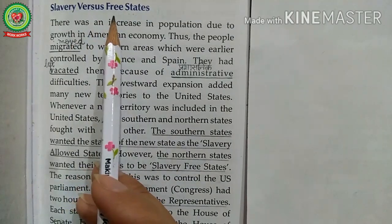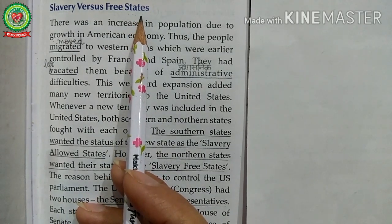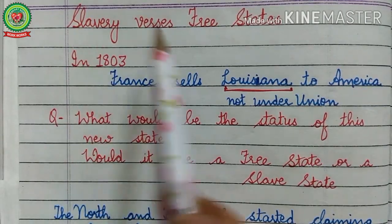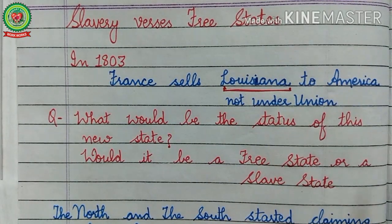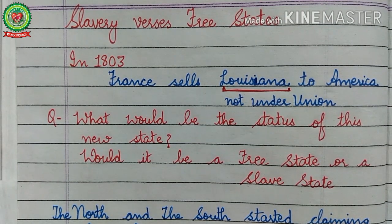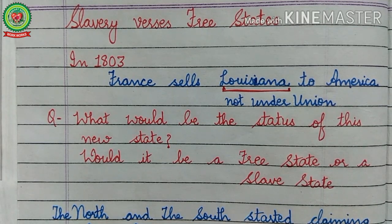Slavery versus free states — this was another main reason of the American Civil War. Before reading, let us discuss the main points. There was an increase in population due to growth in American economy. Thus, the people migrated to the western areas which were earlier controlled by France and Spain. They vacated those areas because of administrative difficulties. This westward expansion added many new territories to the United States.